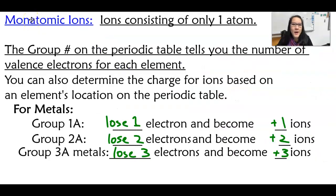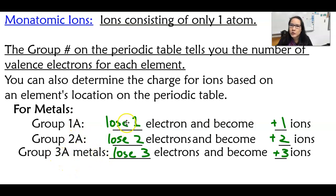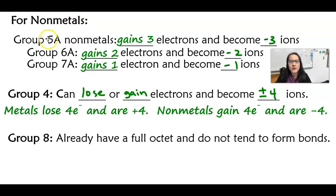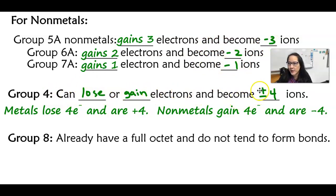There are two types of ions. Monoatomic ions consist of only one atom. The group number on the periodic table tells you the number of valence electrons, and from there you can determine the charge of the ion. Groups 1A, 2A, and 3A — alkali metals, alkaline earth metals, and the boron family — will tend to lose one, two, and three electrons and become plus one, plus two, and plus three cations. For non-metals, usually groups 5, 6, and 7 — the nitrogen family, oxygen family, and halogens — they'll tend to gain three, two, and one electrons and become negative three, negative two, and negative one anions. Group 4 can lose or gain electrons and become plus or minus four ions. Group 8 already has a full octet, so they don't need to form any bonds.